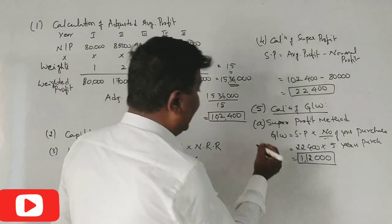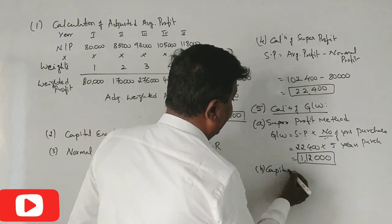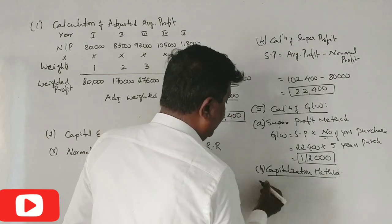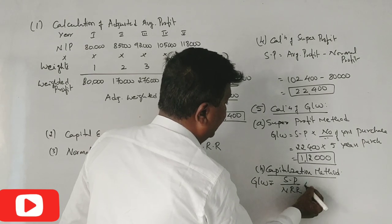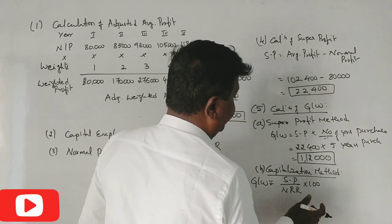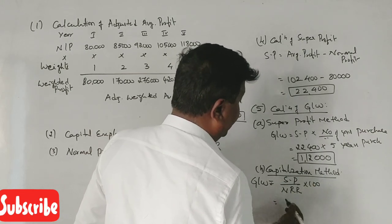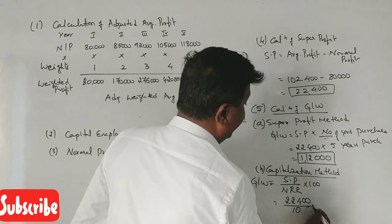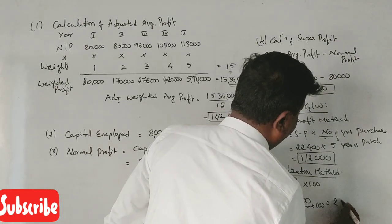Under the capitalization of super profit method, goodwill = super profit ÷ normal rate of return × 100. Super profit is 22,400 and the normal rate of return is 10%. So goodwill = 22,400 ÷ 10 × 100 = 2,24,000.